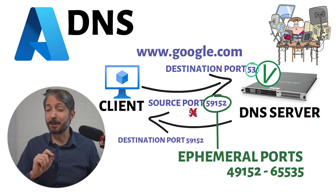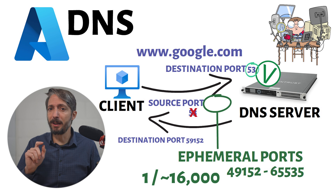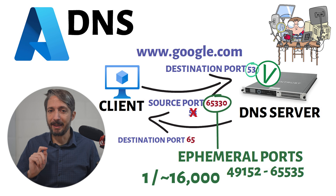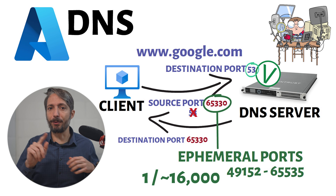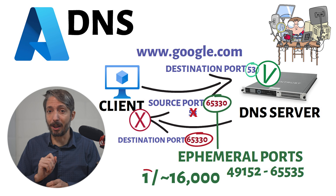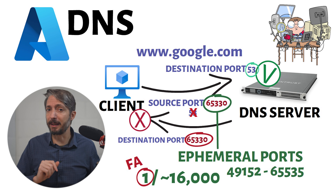In our case, the client sends a DNS request on destination port 53 using a high port as the source port. It happens that one out of roughly every 16,000 requests will use port 65,330 as the source. The DNS server responds back on that source port, and whenever it's 65,330, the connection will fail and cause a timeout.